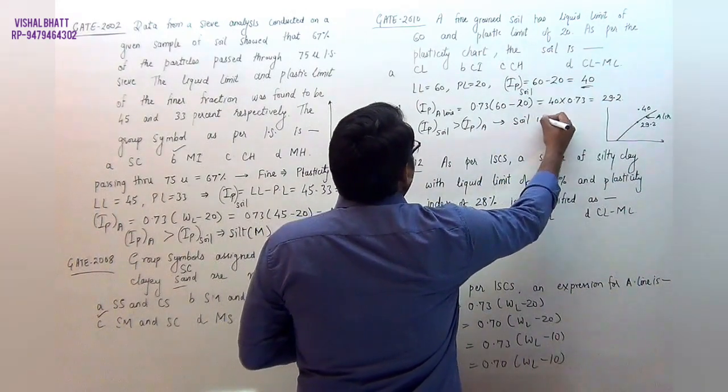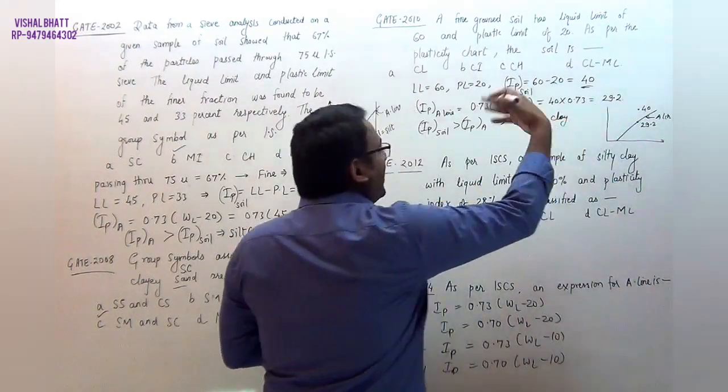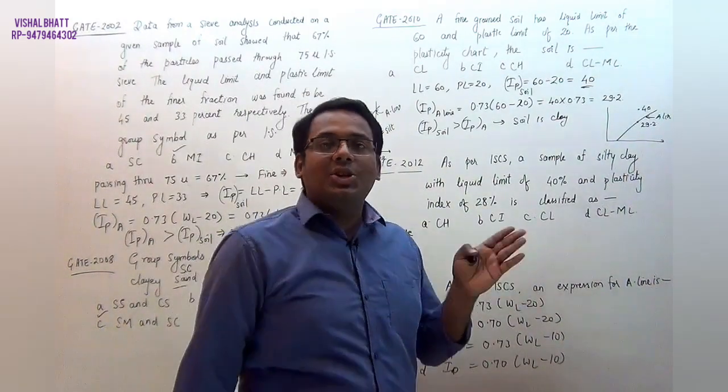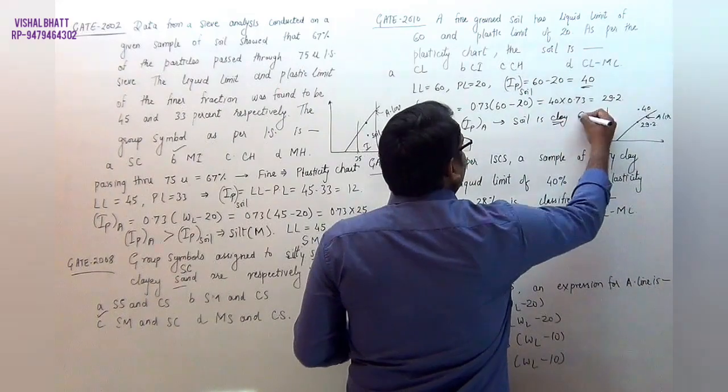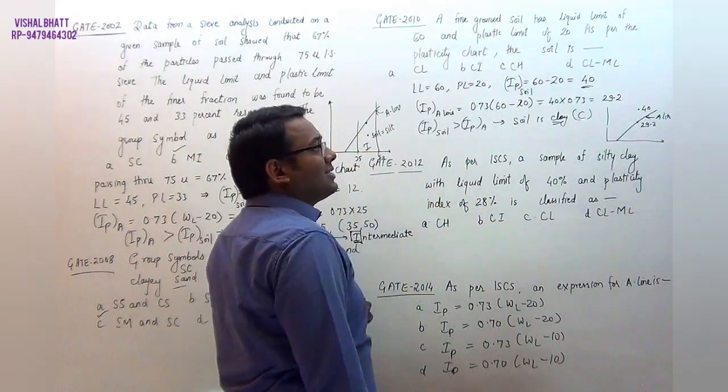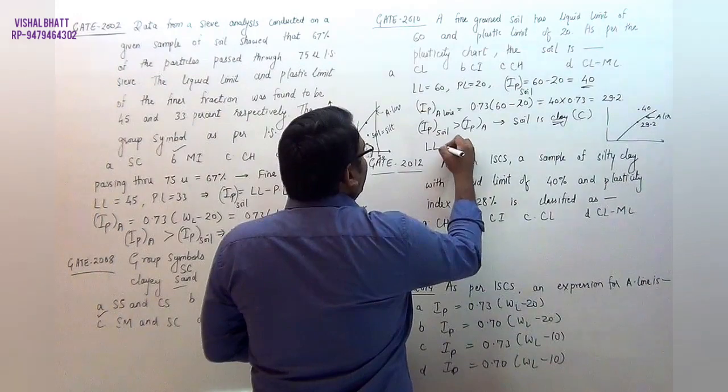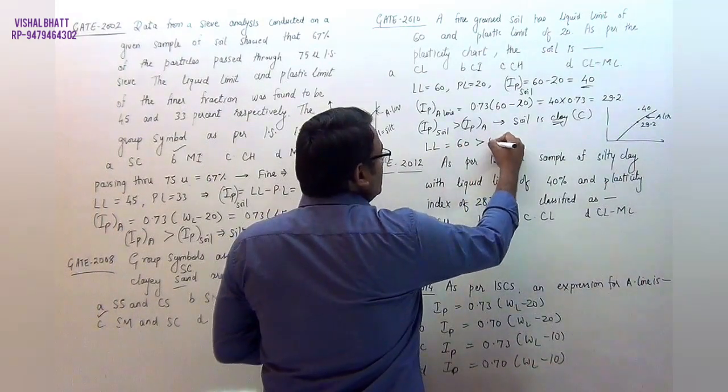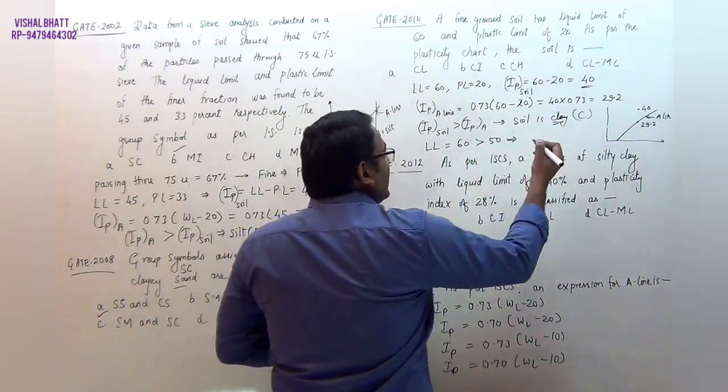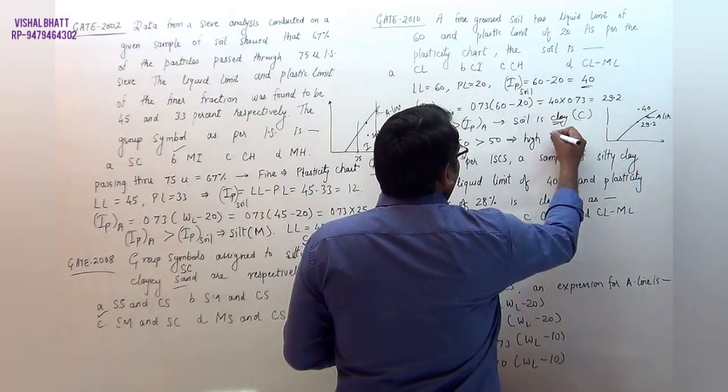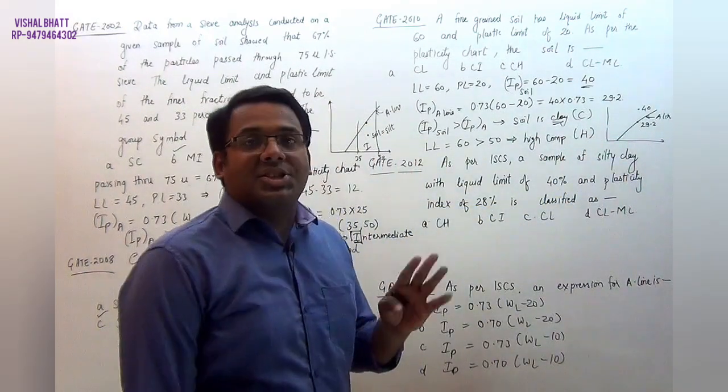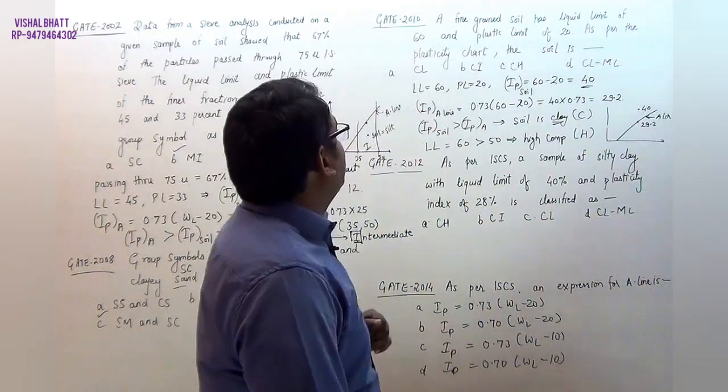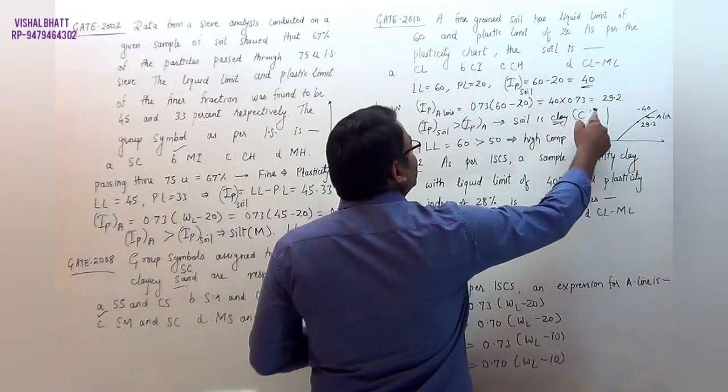If I check in the graph, let's say this is your A-line. The A-line value is 29.2, while for soil the value is 40. That means the soil is above the A-line. As IP of soil is more than IP of A-line, I can say that the soil is clay, because above the A-line is clay, below the A-line is silt. So soil is clay. For clay the notation will be C. Then if I check here, the LL is 60, which is greater than 50, meaning the soil will be of high compressibility. That means the notation will be H. So the correct answer is CH, option C.